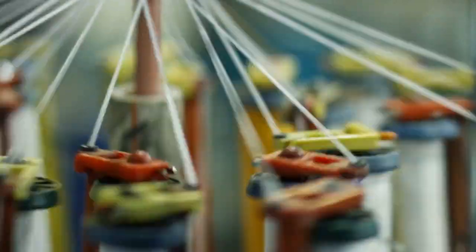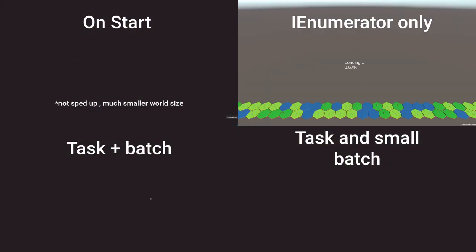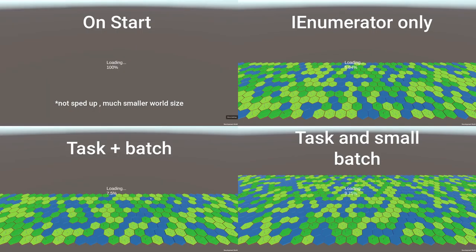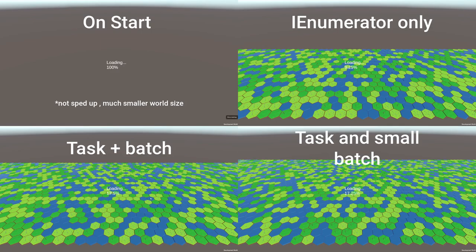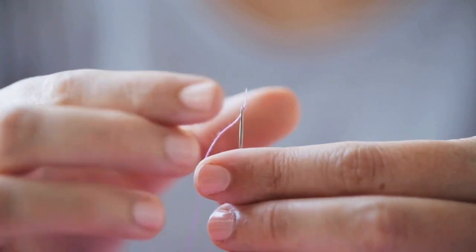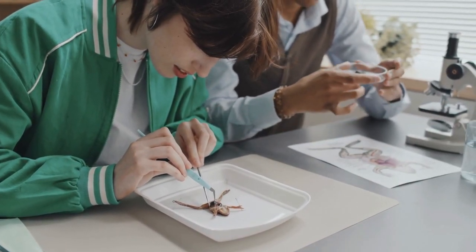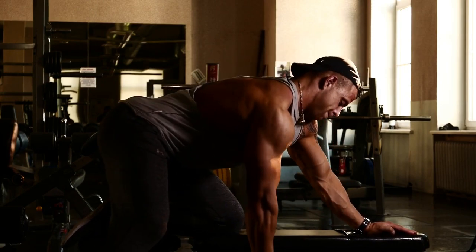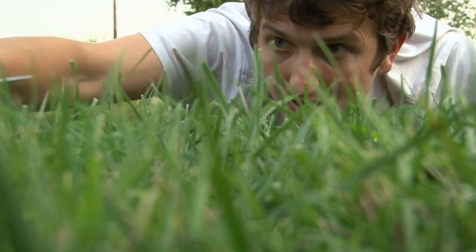We can also offload heavy lifting to a separate thread using Task, making the process even smoother. Threading is about managing multiple operations, but it's not without challenges. Tasks in C# allow us to offload heavy computations to background threads — game-changing for operations like pathfinding where calculations can be complex and time consuming.